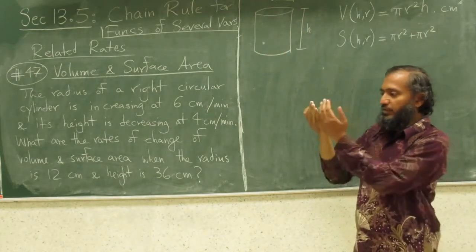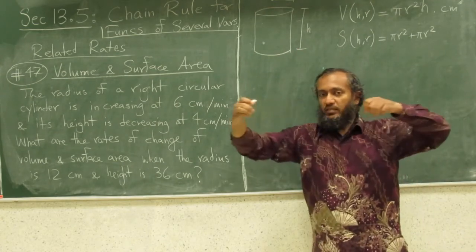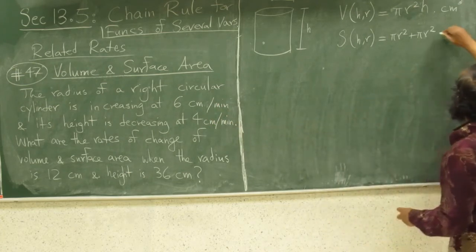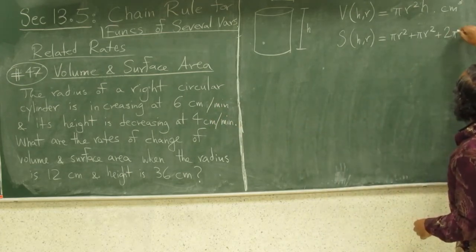The height is h and if I open it, it will be the length of the circumference of the circle which is 2 pi r, so 2 pi r h.